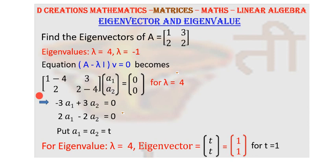This is how the equation is going to be written. So 1 minus 4 is simply minus 3. So minus 3 into a1 plus 3 into a2 is equal to 0. That is the first equation we get and then 2 into a1 and 2 minus 4 is minus 2. So minus 2 into a2 is equal to 0 is the second equation we get.